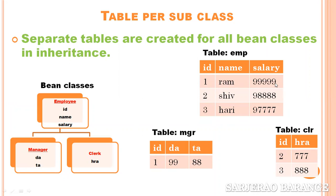Superclass property values are stored in the EMP table and subclass property values are in the Manager table. Similarly, when we insert a Clerk record and save the Clerk object, the superclass property values go into the EMP table — for example, a name like 'Shrieve' with a salary, and the id might be 2. Since this is a Clerk record, the subclass property values go into the CLR table with the id=2 as a foreign key. So the record with id=2 in EMP belongs to Clerk. This is how relationships between records are established. Now let us discuss this strategy programmatically.